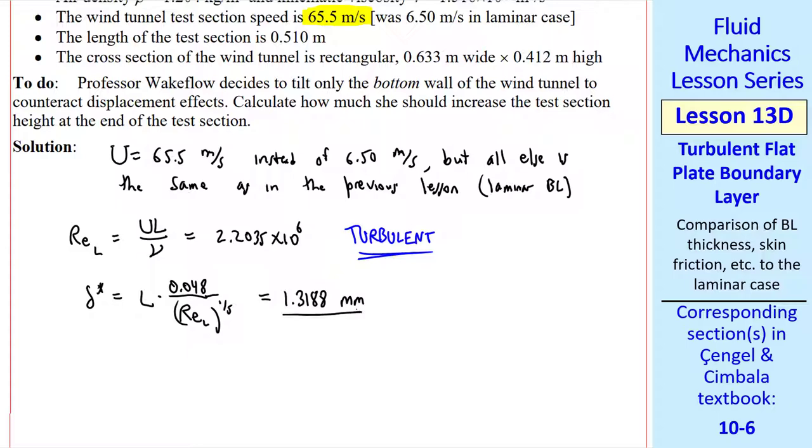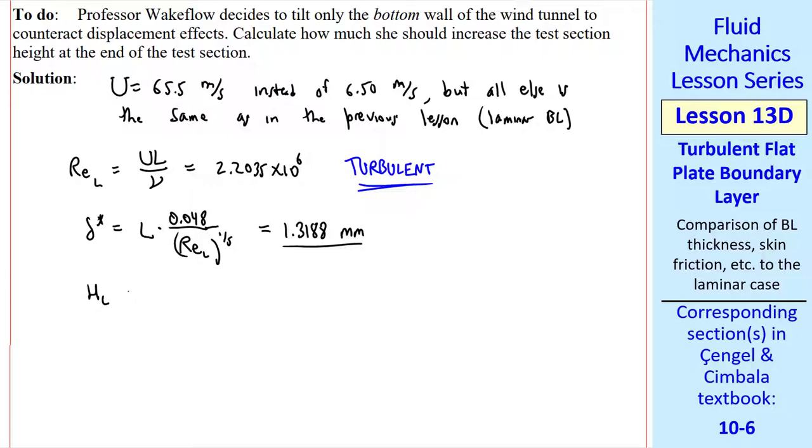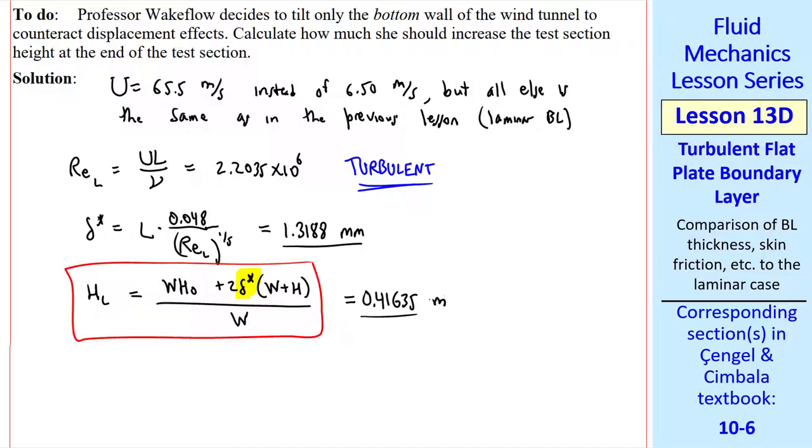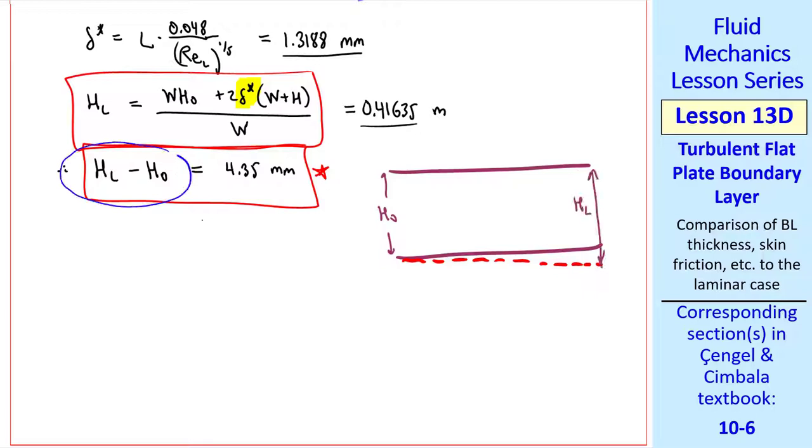We'll use our one-fifth law to calculate delta star. And I get 1.3188 millimeters. We can use the same equation for the adjusted height, HL, as we had in the previous lesson, which I rewrite here. The only thing different is the delta star. When I plug in the numbers, I get 0.41635 meters. So the difference in test section height from the beginning to the end of the test section turns out to be 4.35 millimeters.